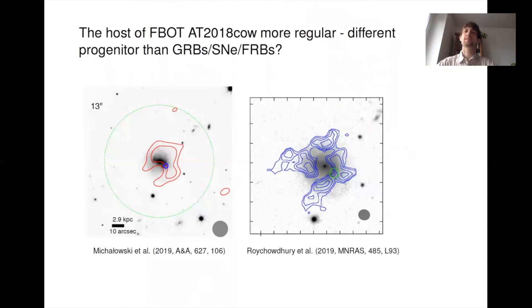It's slightly different for fast blue optical transients. Although there is only one case analyzed here in H1, AT2018cow, and in that case, the H1 distribution is more regular, is more symmetric. So if that turns out to be the case for a larger sample, then that would suggest that the progenitors of FBOTs are different than the progenitors of GRBs, supernovae, and FRBs. Thank you very much.